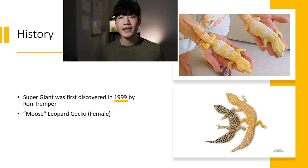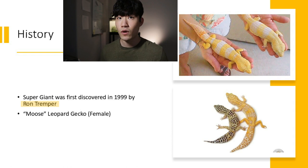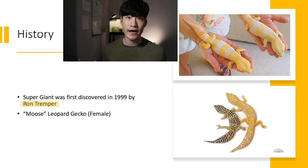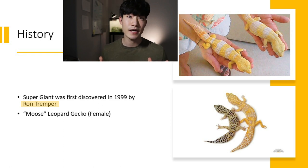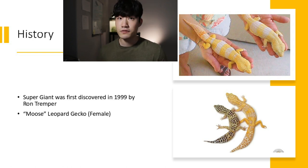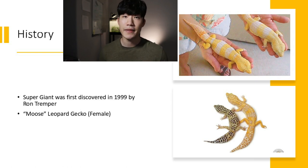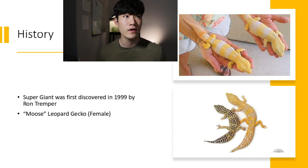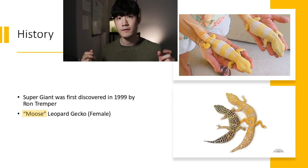Starting with the history: around 1999, Ron Tremper — as you know, he is one of the well-known breeders for the Tremper albino and is the founder of that line — was working with that project, and one day he discovered the super giant morph from his Tremper albino lines. It was a random mutation, which is how we normally get new genetics and new morphs, and he named that first hatchling — a female — "Moose."